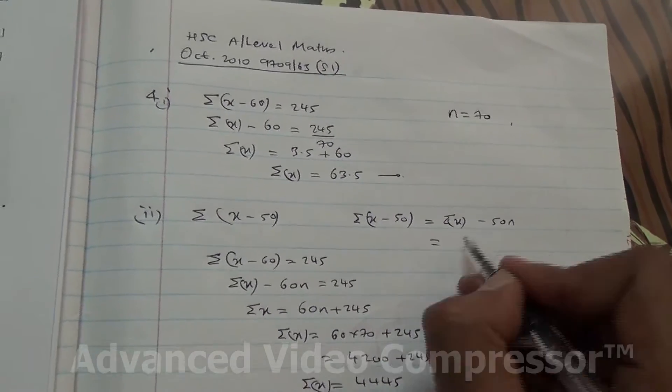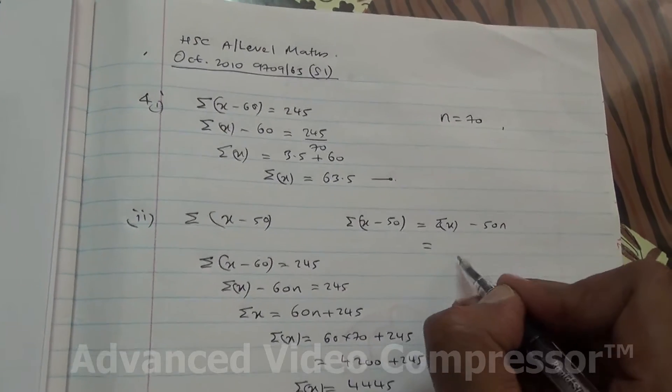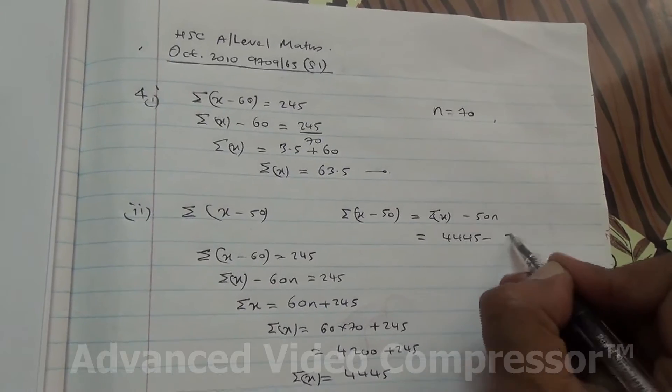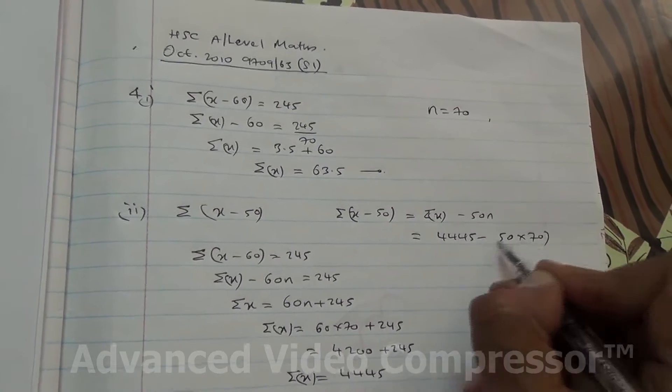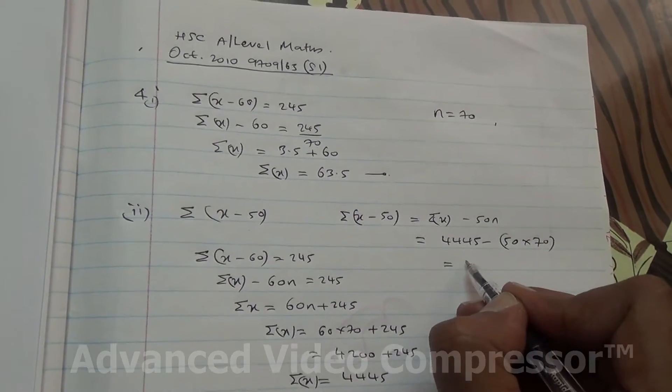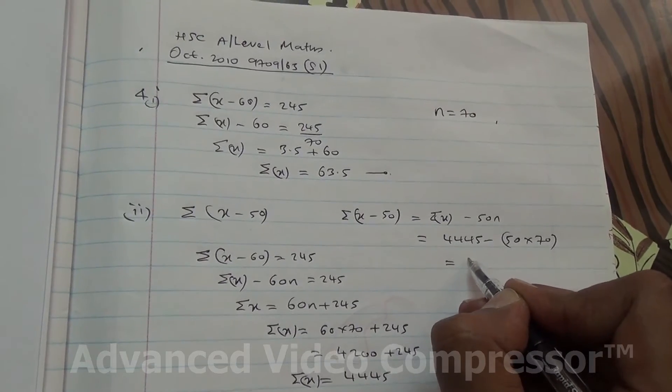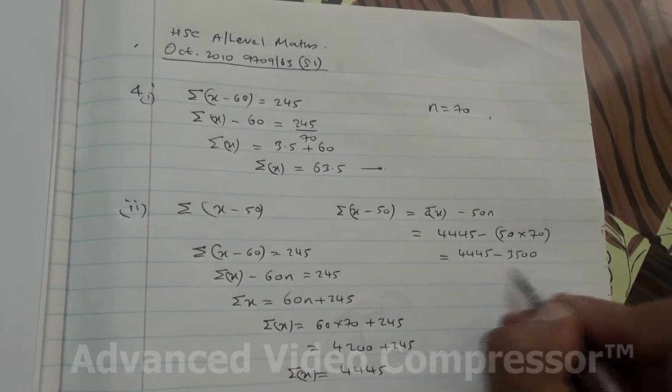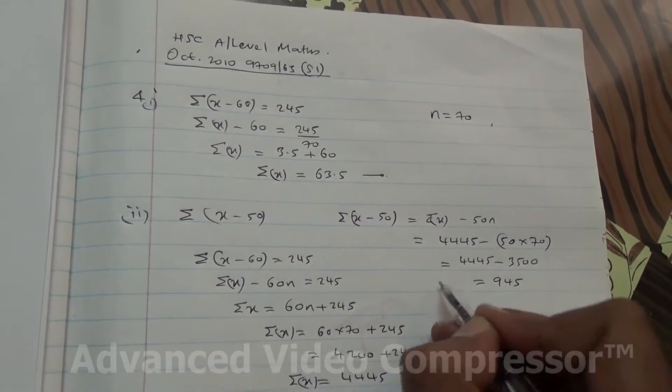Applying this in here, summation of x is what? It is 4445 minus 50 times n, 50 times n is 70 there. So if you do that, you're going to get 4445 minus 3500, you're going to end up with 945.